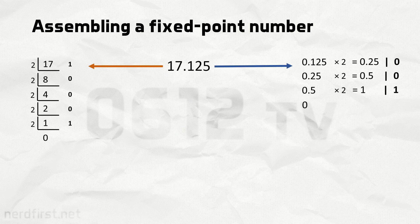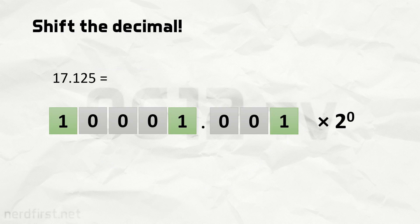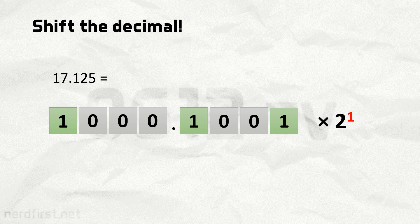What we essentially have now is one bit string for the integer portion and one bit string for the decimal portion — essentially a fixed point number if we were to assemble these two parts together. But what we're doing here is floating point, so we have to fit everything into the mold of sign, mantissa, and exponent. What we have right now can be expressed as multiplied by 2 to the power of 0, which just means 1. But what we can do is shift the decimal point. Every shift to the left increases the exponent by 1; every shift to the right decreases it.